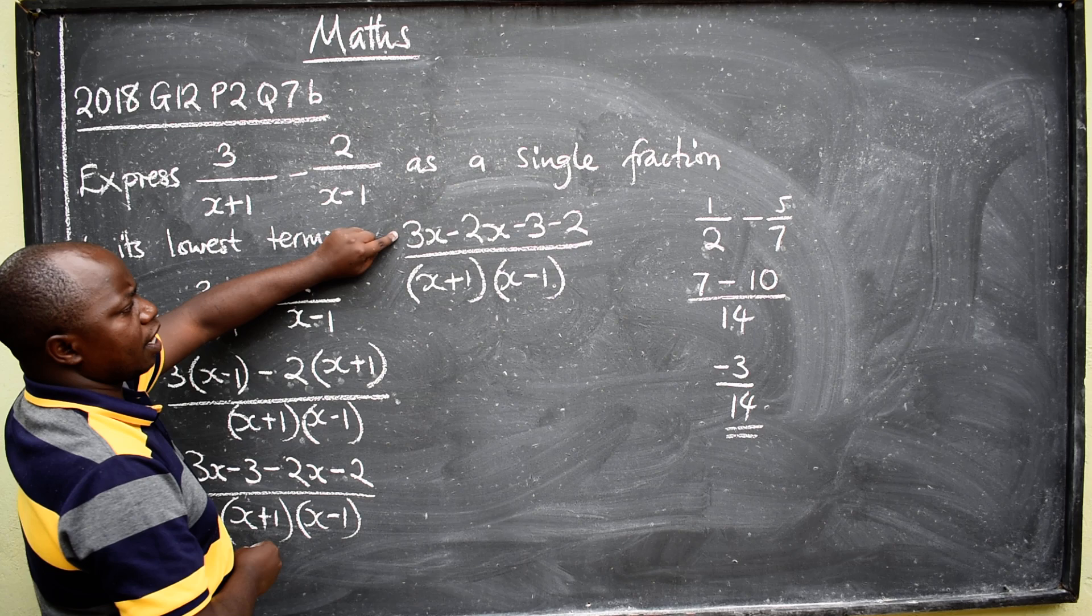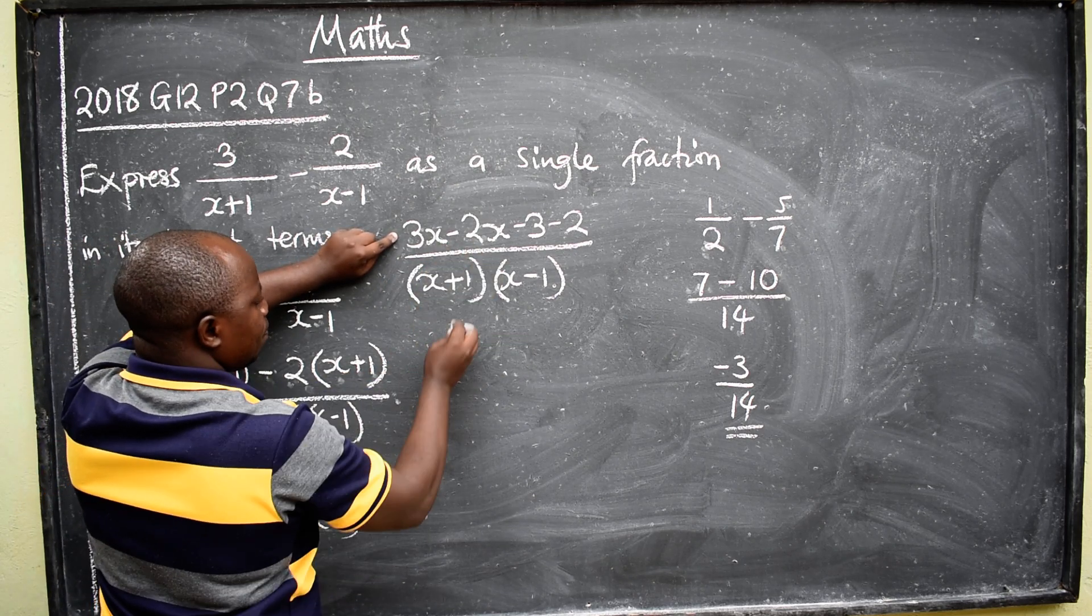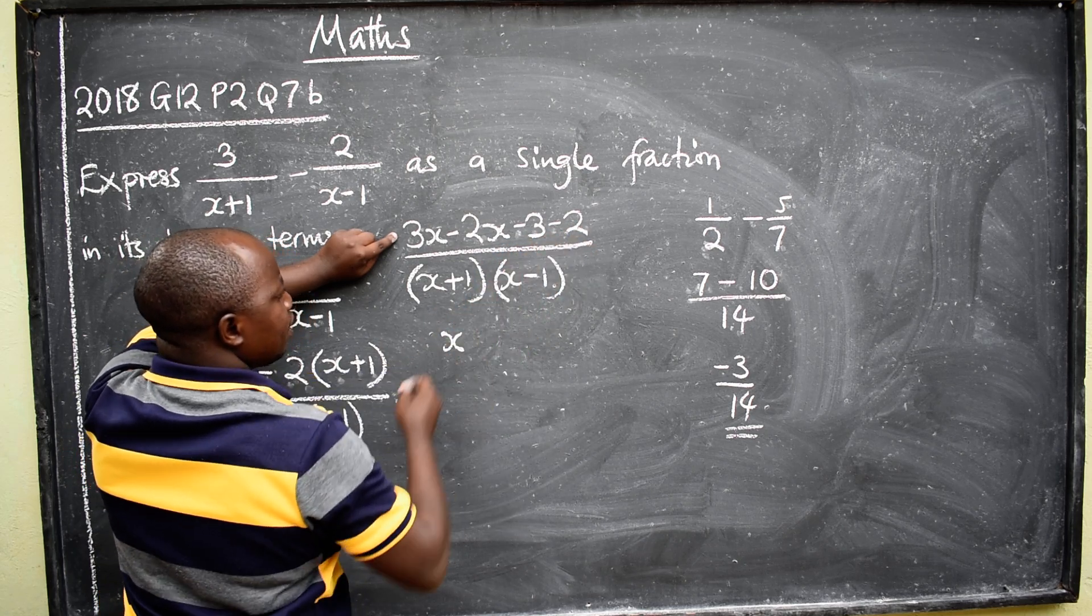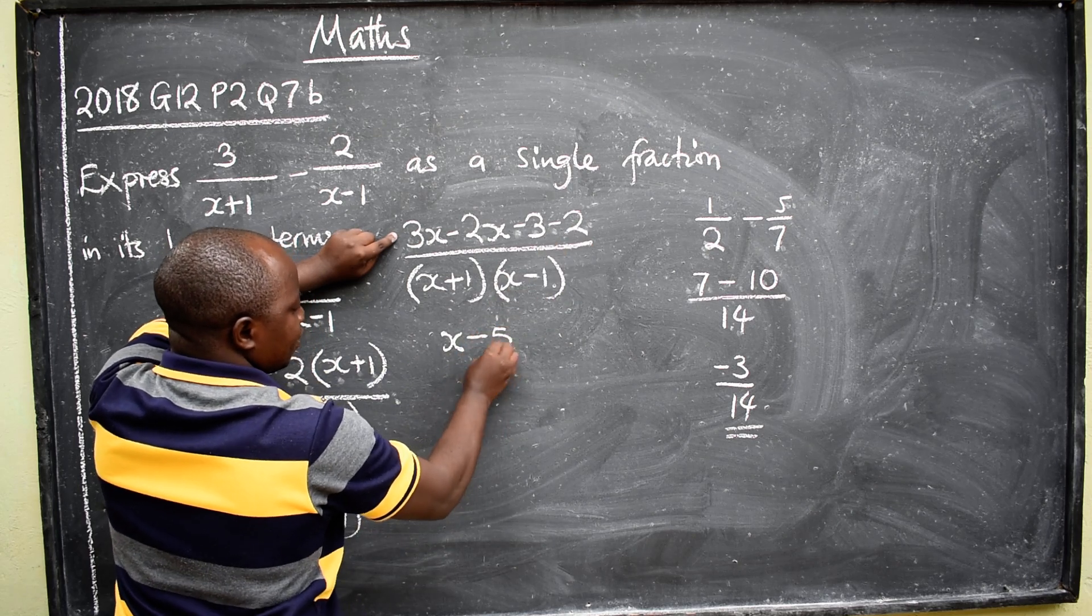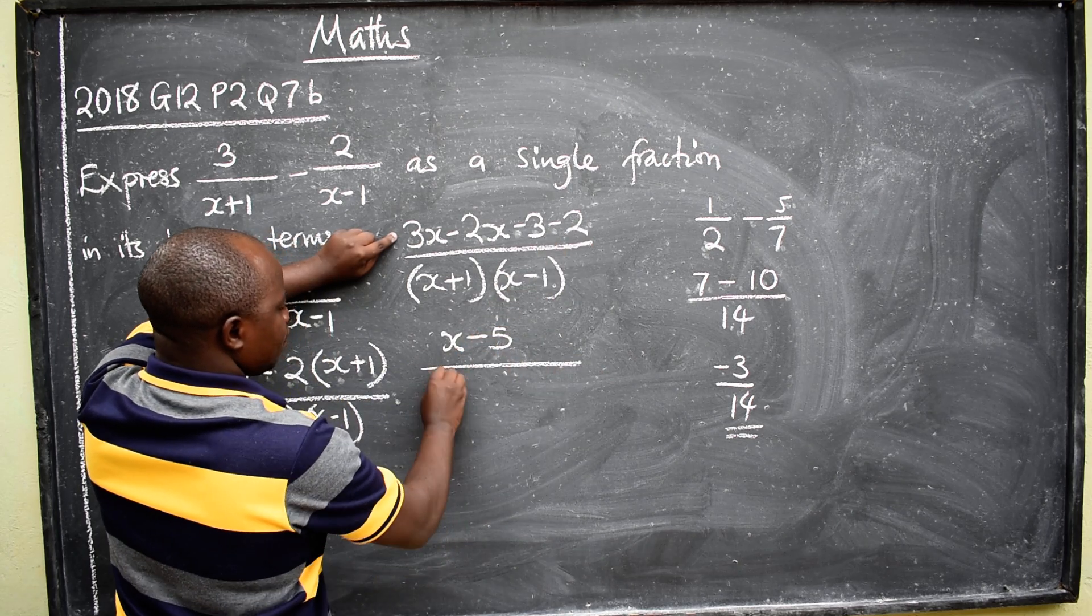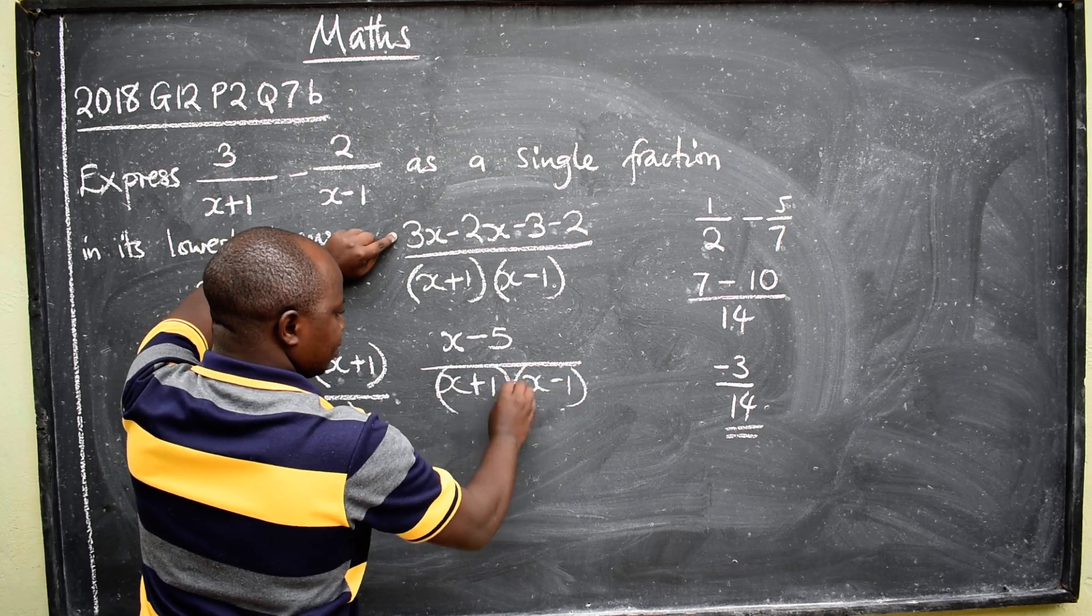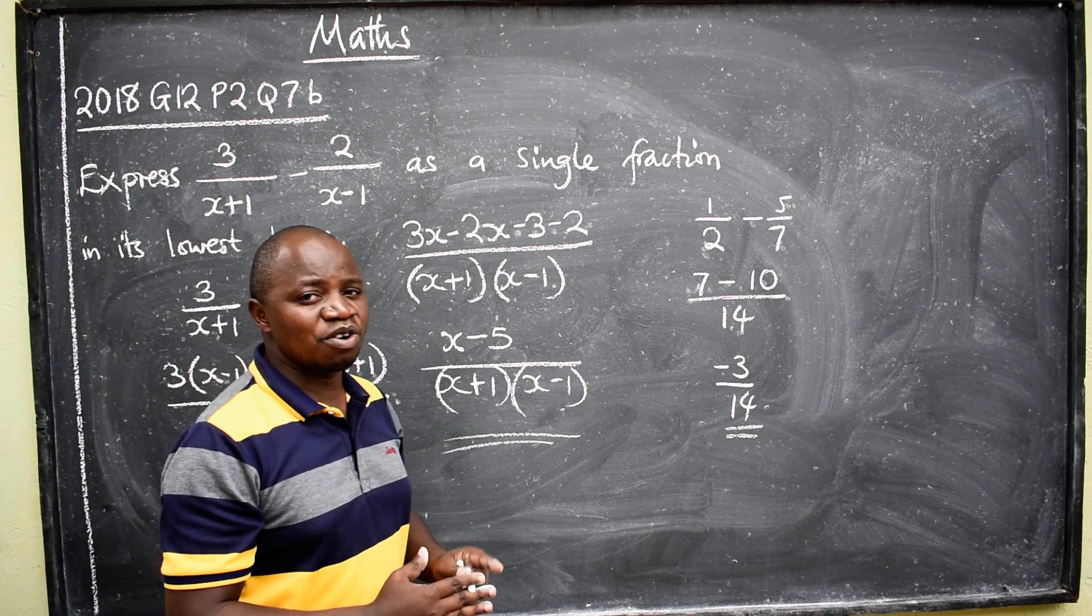Here we can subtract. 3 minus 2 will give us 1, which will be x. Then negative 3, negative 2 will give us negative 5. Everything over x plus 1, x minus 1. This is the final answer you have expressed as a single fraction.